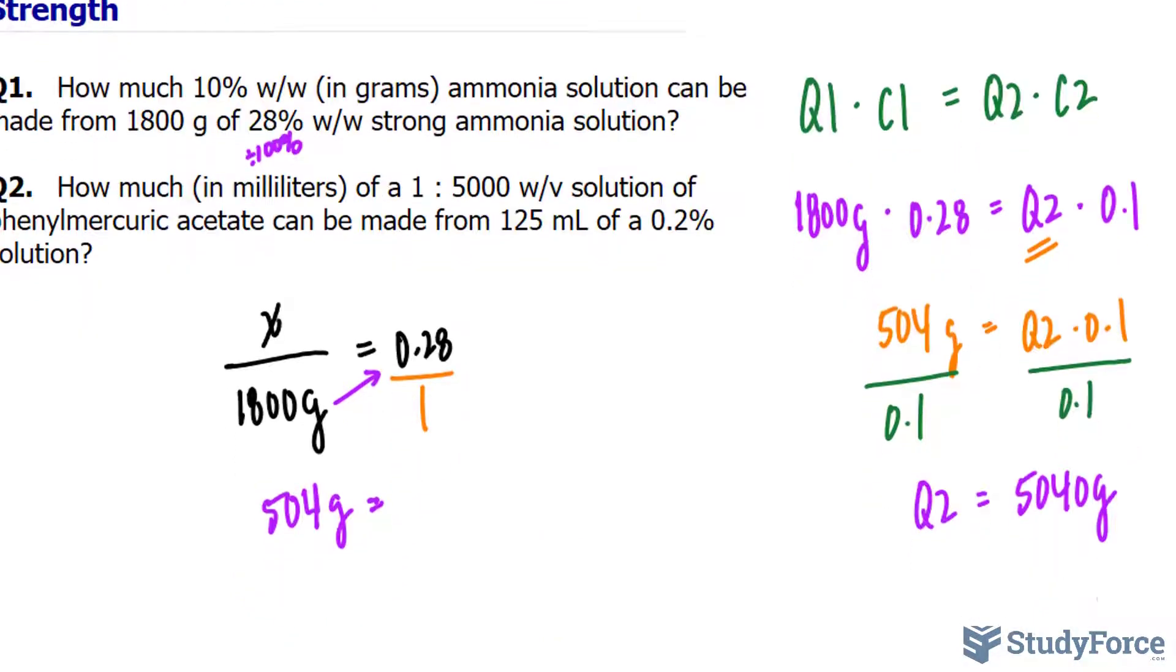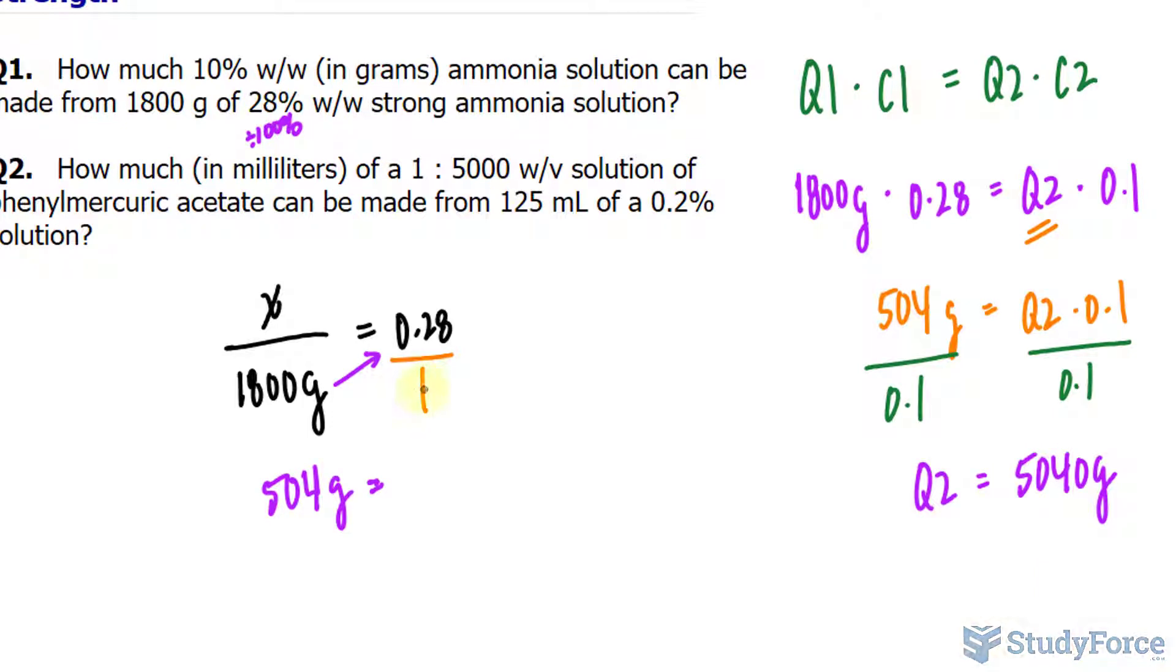Remember, this is a unitless number. And 1 times X is X. So 504 grams out of the total 1,800 grams consist of active ingredient.